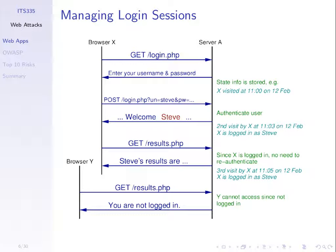The web server knows this is browser X contacting it again, X has already been authenticated, there's no need to re-authenticate, and it sends back a tailored response. If browser Y tries to get the results, it gets a message saying 'you are not logged in, you cannot view the results until you're logged in.' Cookies can be used to do this — state information at the server.